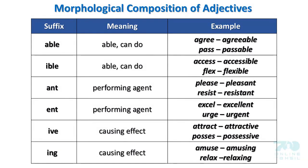The suffix -able means 'can do': Agree → agreeable, Pass → passable. The suffix -able also applies to: Access → accessible, Flex → flexible.